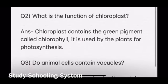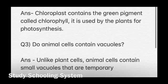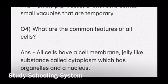Your third question is: do plant cells contain vacuoles? If you recall correctly and have read the chapter and paid attention in class, you will remember that plant cells are the ones that have large permanent vacuoles, whereas animal cells contain small vacuoles that are temporary. The fourth question is: what are the common features of all cells? All cells have a cell membrane, a jelly-like substance called cytoplasm, which has organelles, and a nucleus.